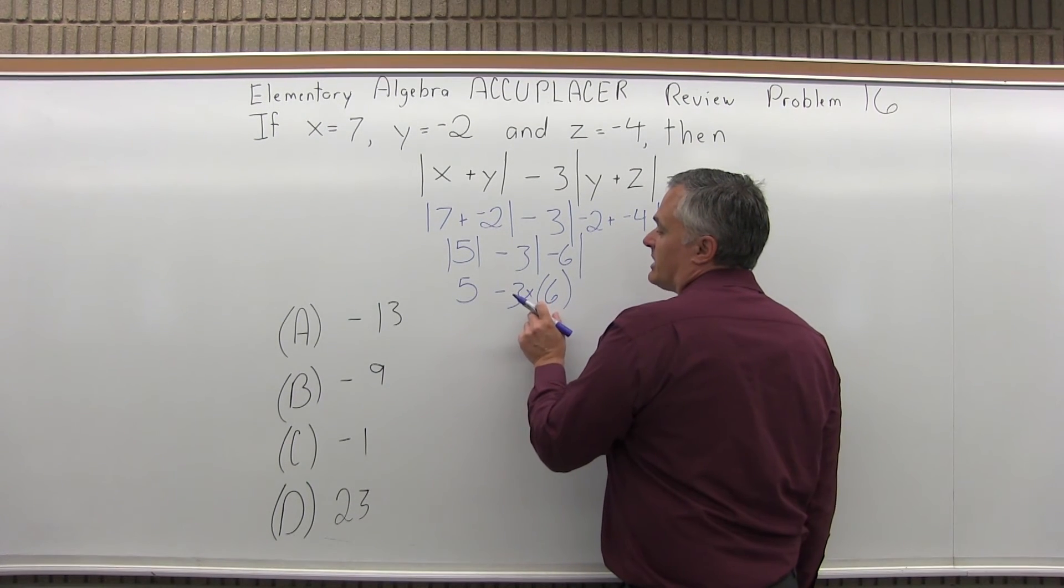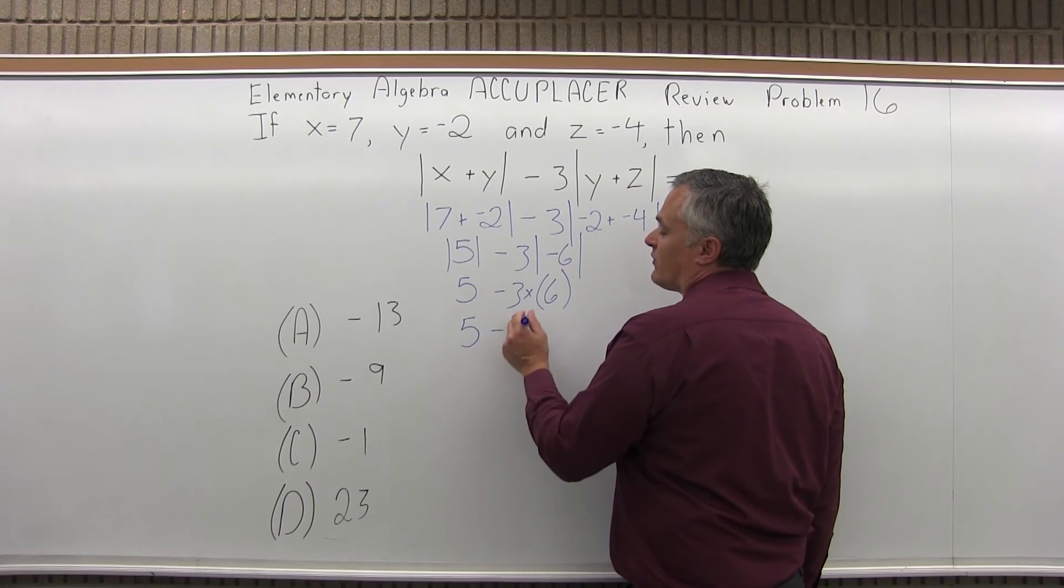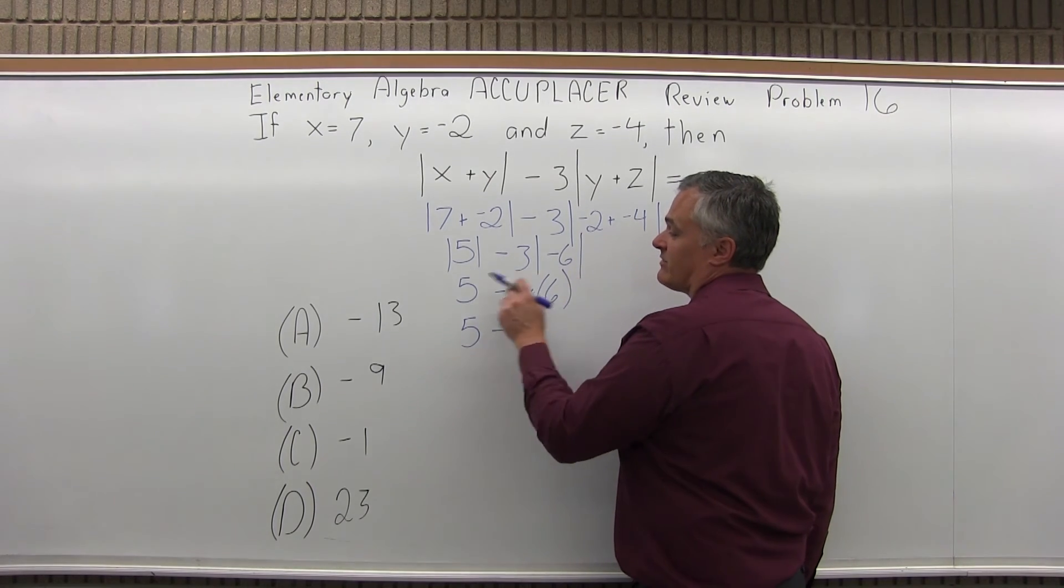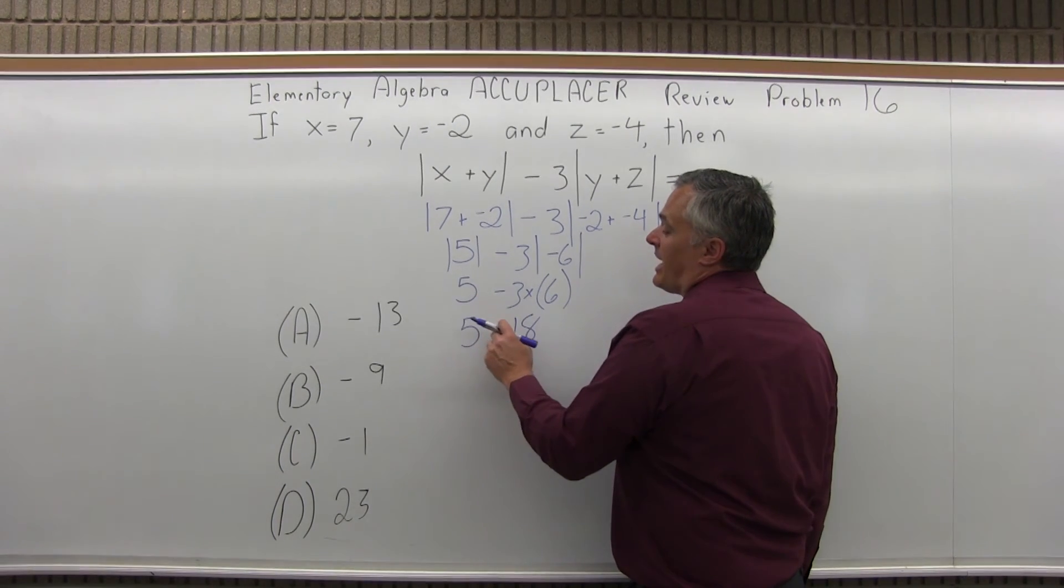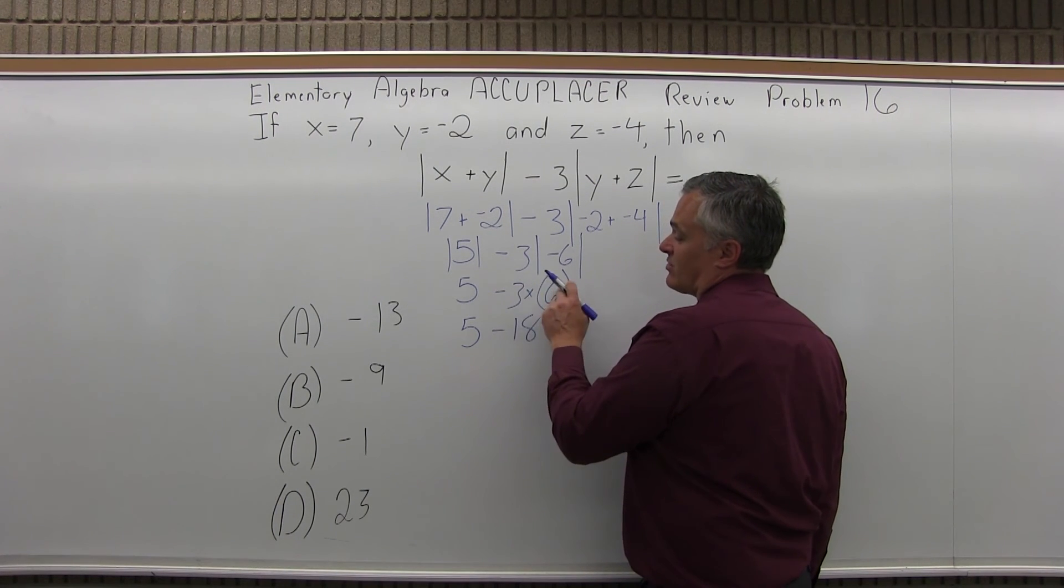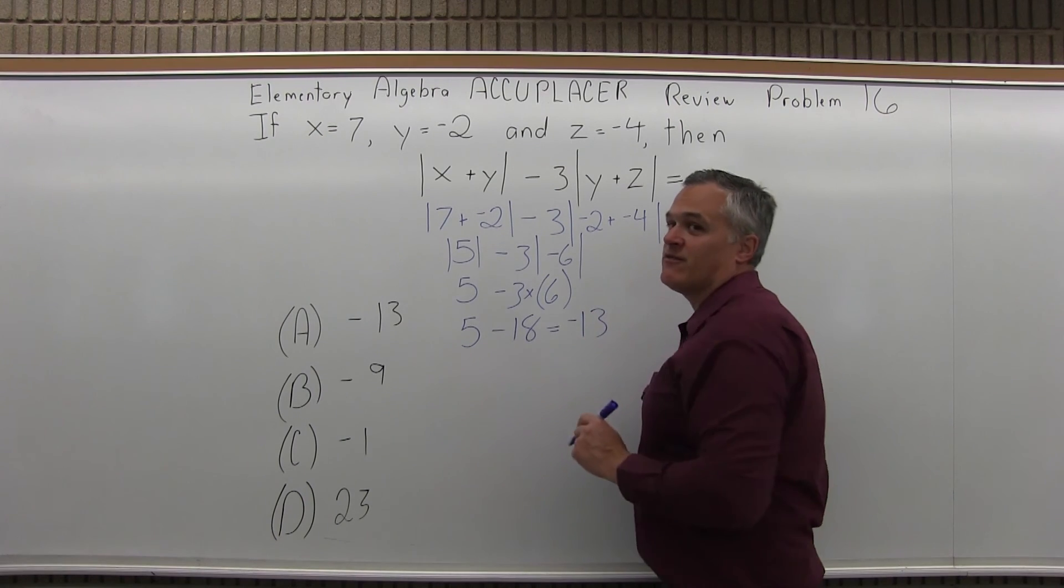When you have a multiplication and a subtraction to do, you have to do the multiplication first. You can't do 5 minus 3 is 2, 2 times 6 is 12, but that's not the right answer. You have to do 5 minus 18. You have to do the multiply first. Notice it's negative, negative 3 times positive 6. 5 minus 18 is negative 13.